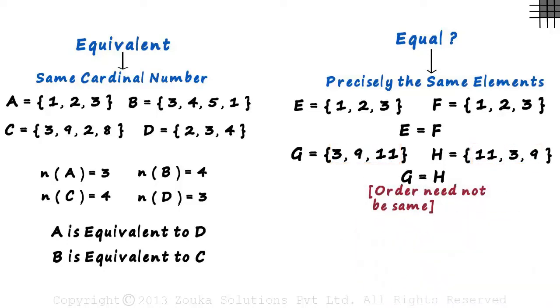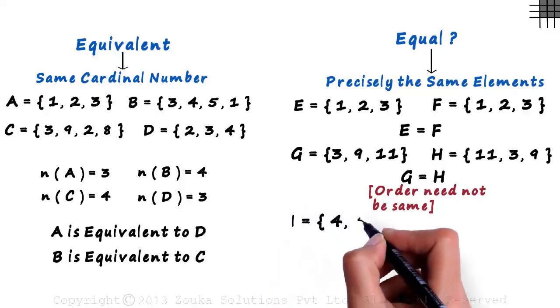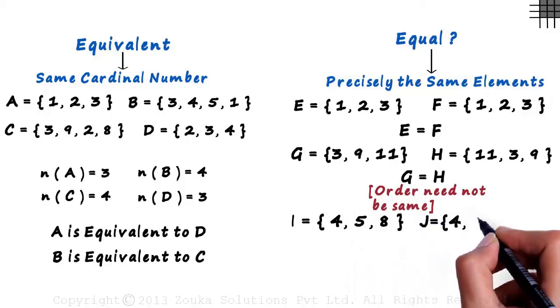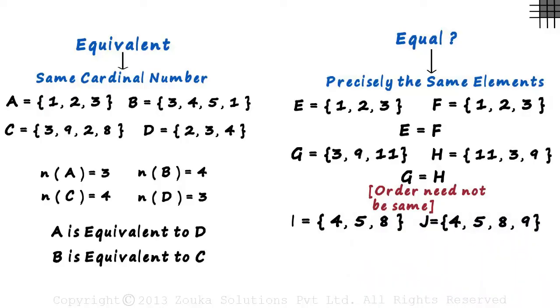Now look at these two sets. Set I consists of 4, 5 and 8. Set J consists of 4, 5, 8 and 9. If you observe, you can see that both the sets have 4, 5 and 8 as their elements. But J also has 9, which set I does not have. This means that I is not equal to J.